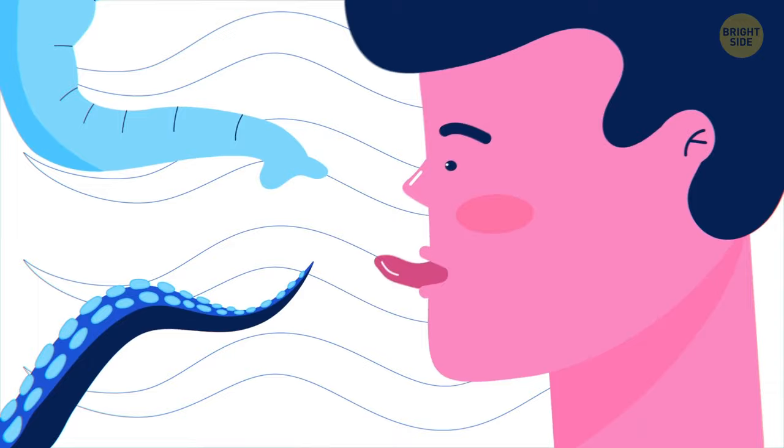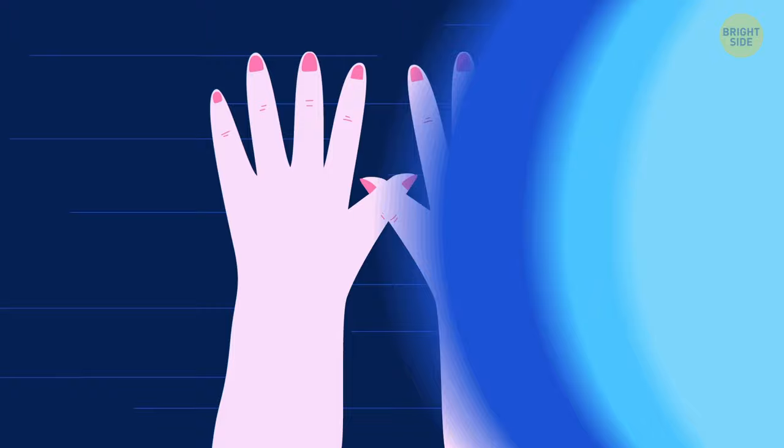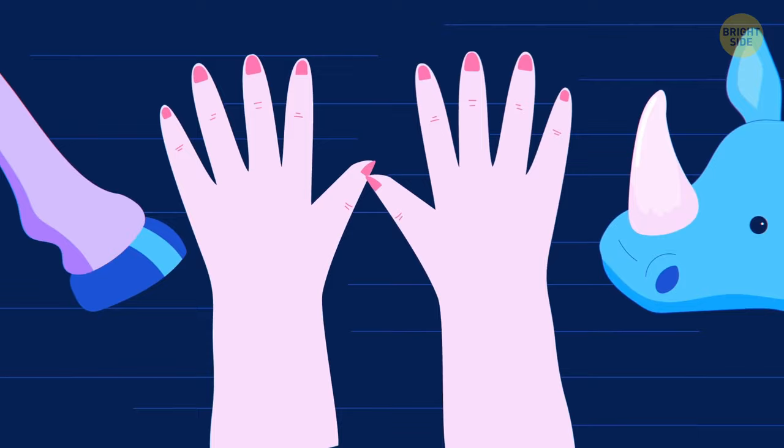In terms of muscle, your tongue is like an elephant trunk and an octopus arm. Oh, that's just wrong. Your nails are made of the same stuff as a rhino's horn and a horse's hoof. And the rhino wants it back.